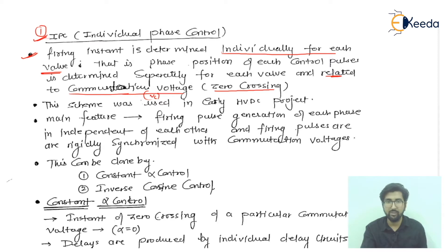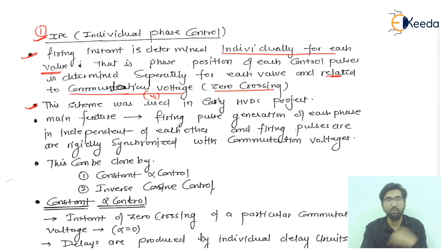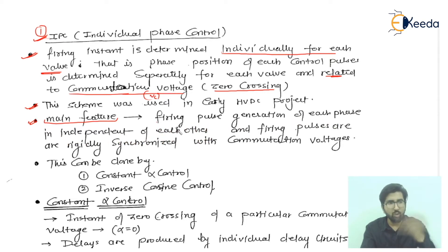This scheme was actually used in earlier HVDC projects. At that time, the IPC was generally used, and then because of its disadvantages we moved forward to EPC schemes. Here it has individual controlling of the phase for alpha. The main feature of IPC is that the firing pulse generation of each phase is independent of each other — they are not dependent on one another.